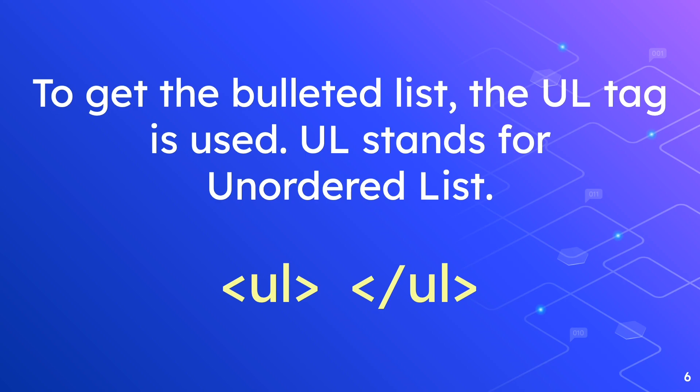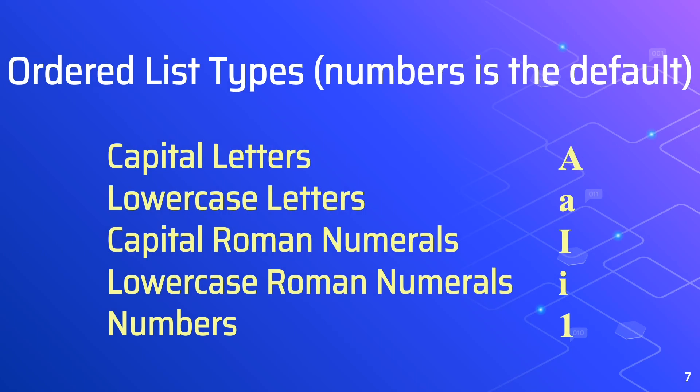For both the ordered and unordered list, you can specify which type you want to use for the bullets or numbers. The types are capital letters, lowercase letters, capital Roman numerals, lowercase Roman numerals, and numbers.